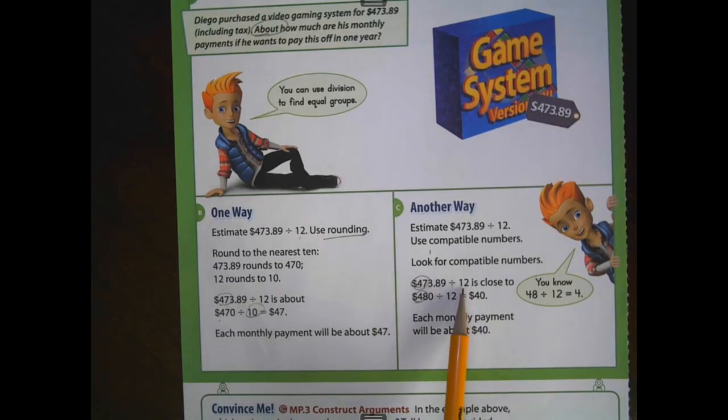Which estimate would be closer? Well, I'm going to go with estimate using the compatible numbers because of the fact that we did not change that second number, the divisor at all. It stayed 12. So if we keep our original dividend and divisor closer in numbers in our estimate, then we're going to have a closer estimate.